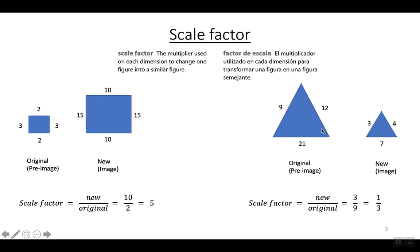I have two examples here. On the left-hand side we have this rectangle. If you look at the length of the sides, it's pretty obvious that all the sides are being multiplied by 5 to get the new shape. This is the pre-image and this is the image. Now on your homework when they ask you for the scale factor, the way you write the scale factor is always as a fraction. You pick two corresponding sides.